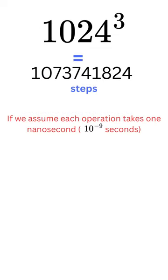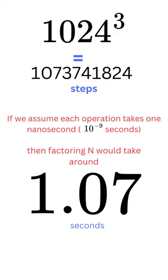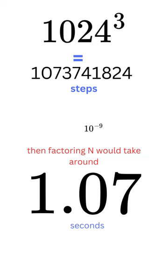If we assume each operation takes 1 nanosecond, which is 10^-9 seconds, then factoring n with Shor's algorithm would take around 1.07 seconds.